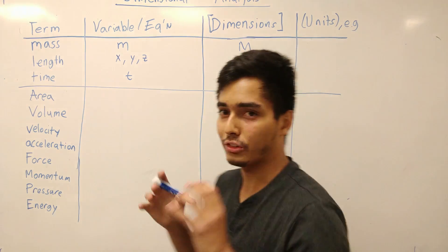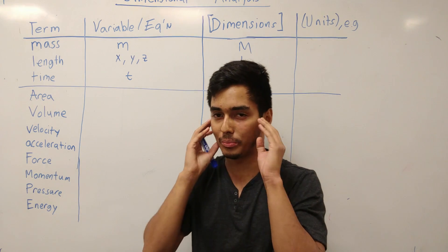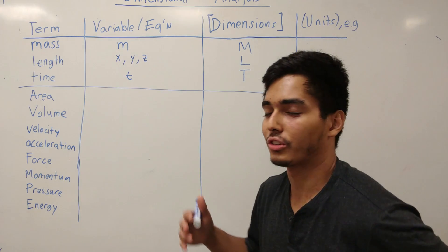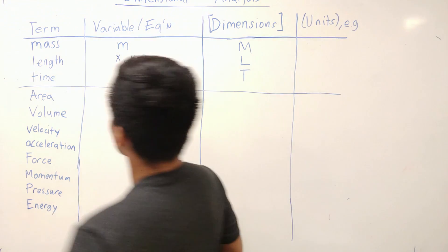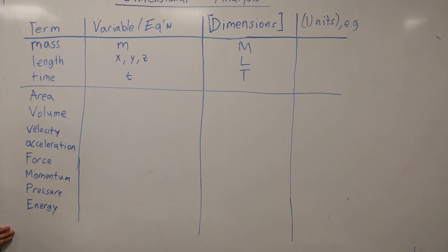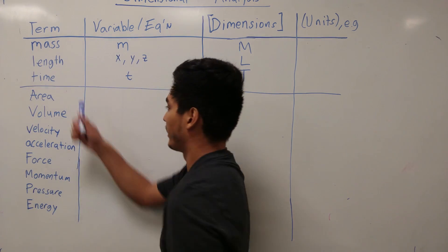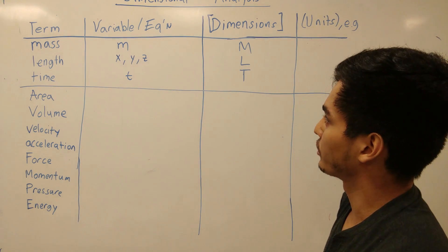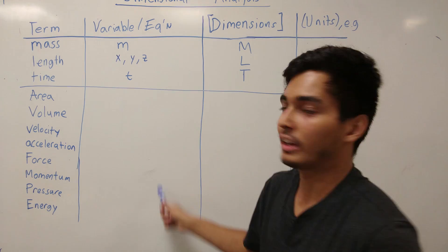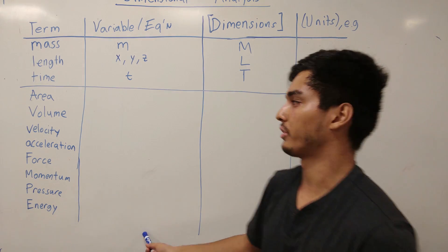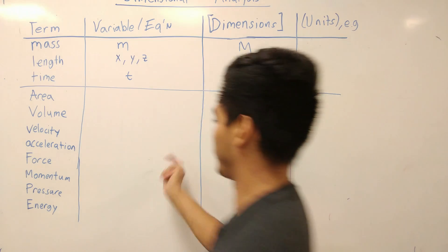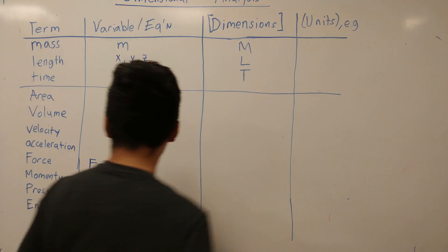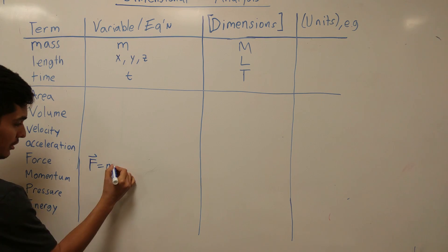This isn't about memorizing — it's about intuitively understanding this so that by the time you get to more advanced fluid mechanics problems and topics, you can use this as your tool belt. What I've laid out here is a table, and I want your goal to be to understand this intuitively. The terms you'll see in physics include: mass, length, time, area, volume, velocity, acceleration, force, momentum, pressure, and energy.